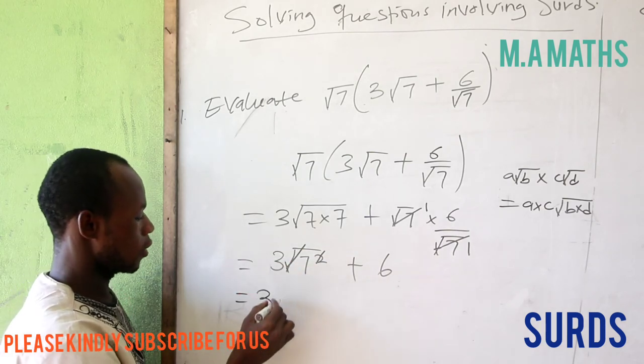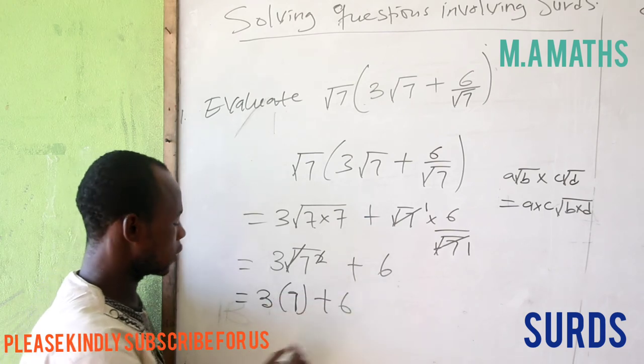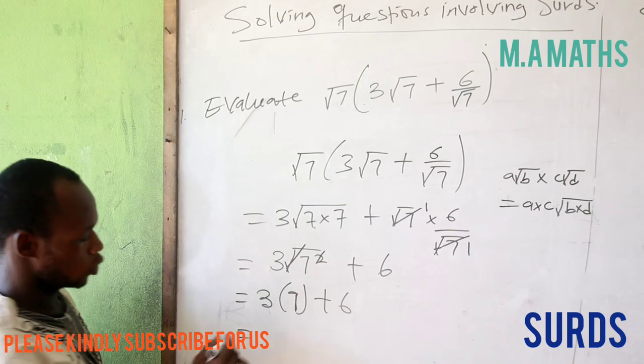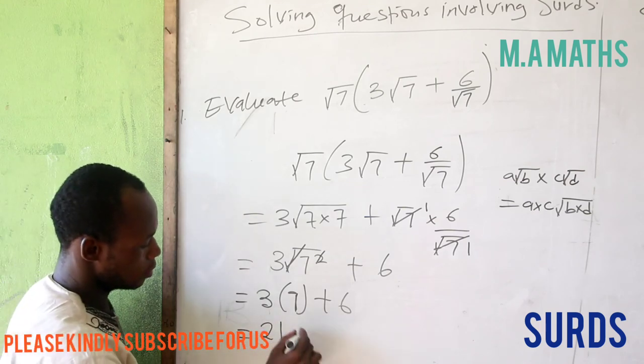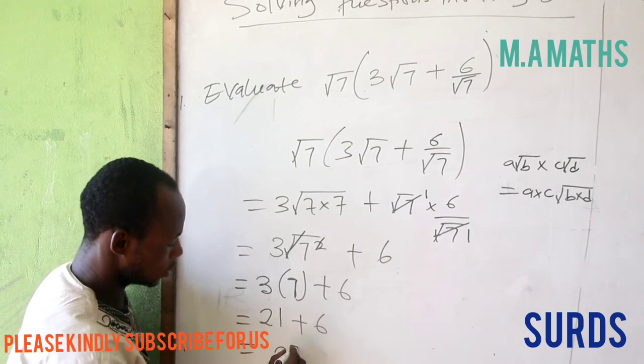3 multiplied by 7 gives us 21, plus 6. Our answer is 27.